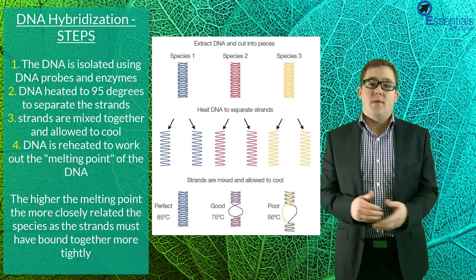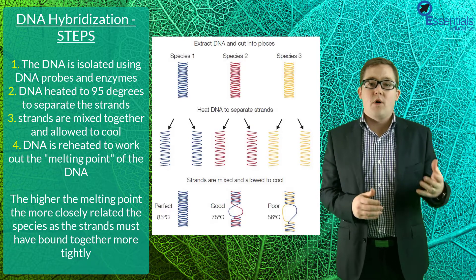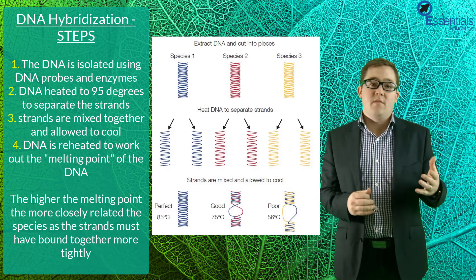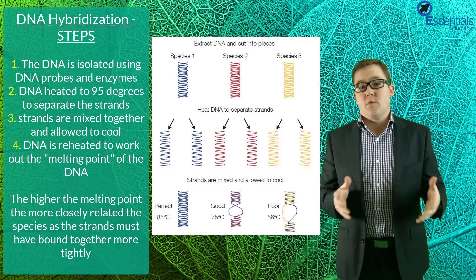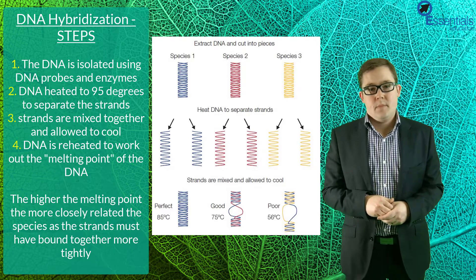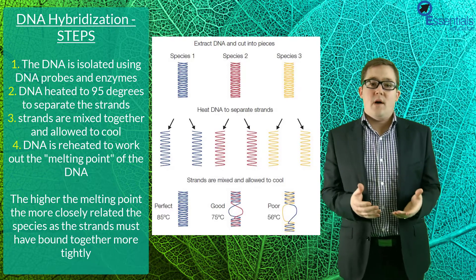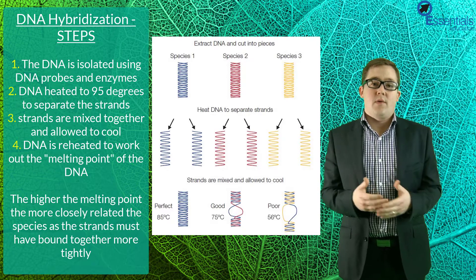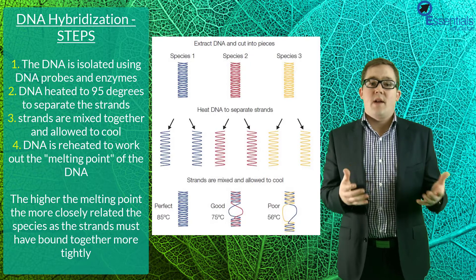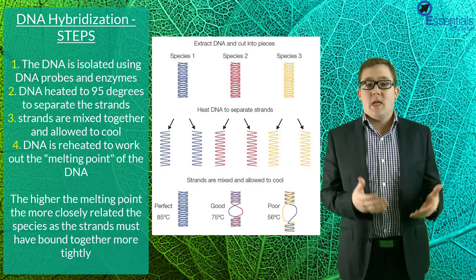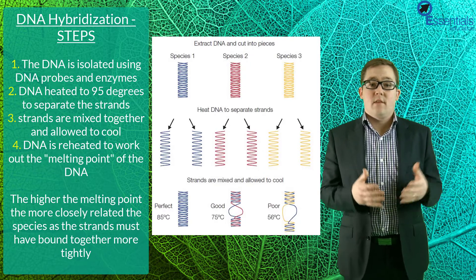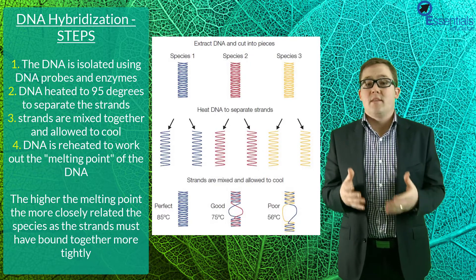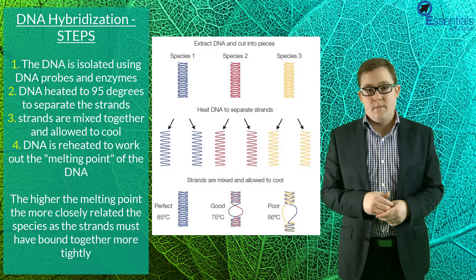Essentially, the higher the melting point, the more common the DNA must have been, as there must have been more bonding between them. So to summarise: the higher the melting point, the greater the similarity between the DNA sequences, and the more likely it is that they shared a more recent common ancestor.